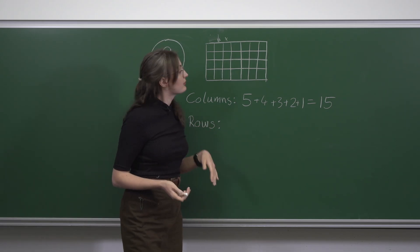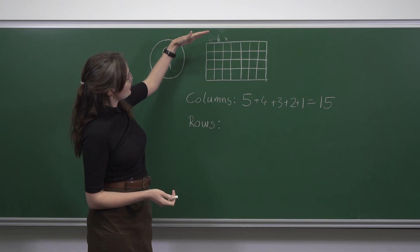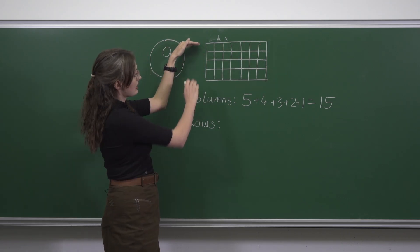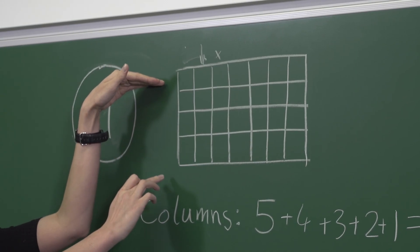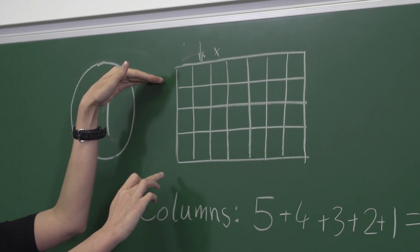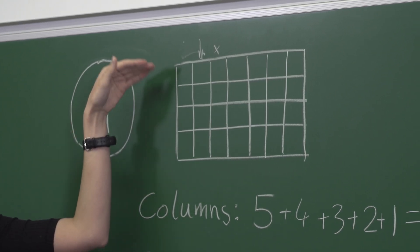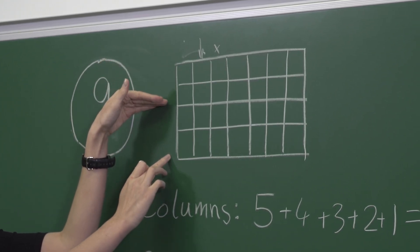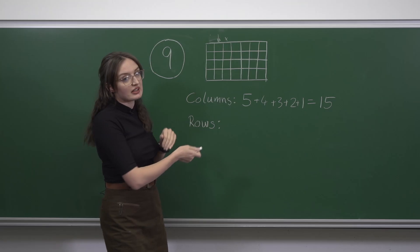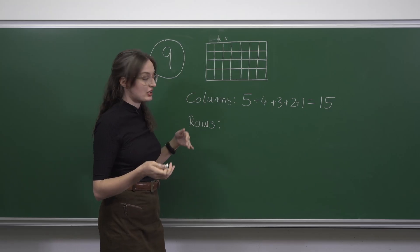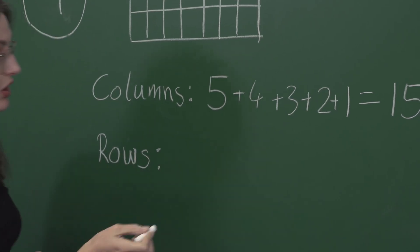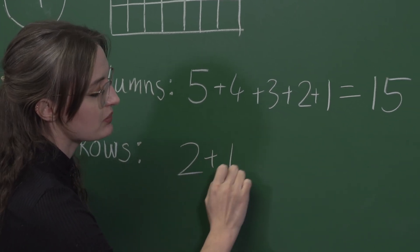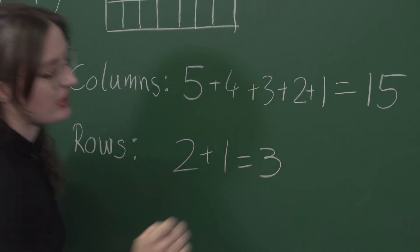We can repeat this idea for the rows, of which there are far fewer. Picking the top row at the very top gives two options for where the bottom row can be, and picking the top row as the second one down gives one option. There are no options for the other positions, so the total for rows is two plus one, which is three.